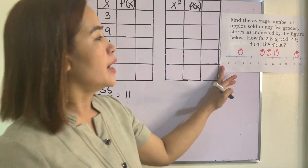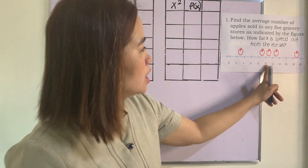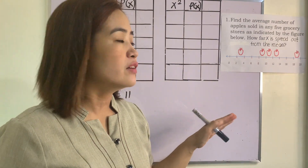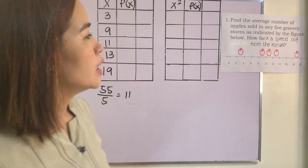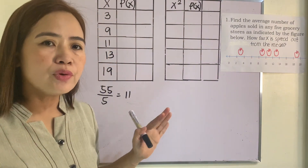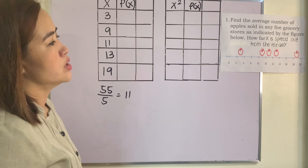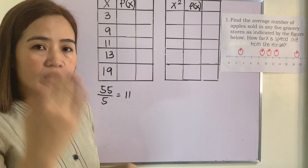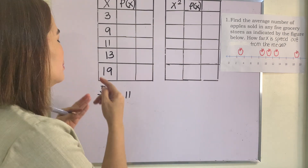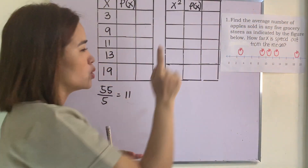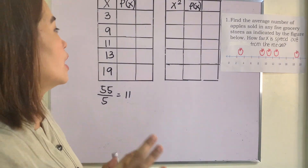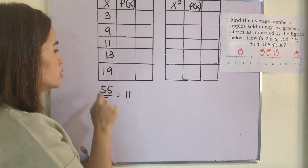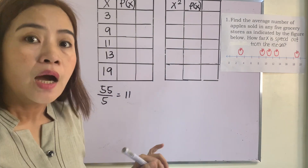As you can see in the diagram, the values go from 0 to 20. The average appears to be 11, between 10 and 12. But how can we prove that the average is really 11? As I said, to get the average you just add all the values and divide by the number of values. It says here five grocery stores, so there are five values. We add everything — that is 55 — divided by 5, which gives us 11.